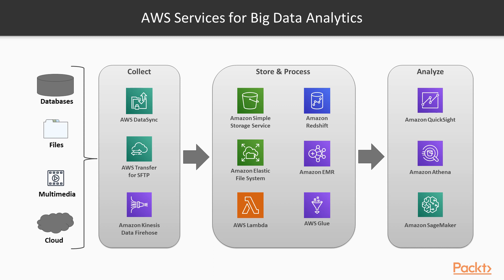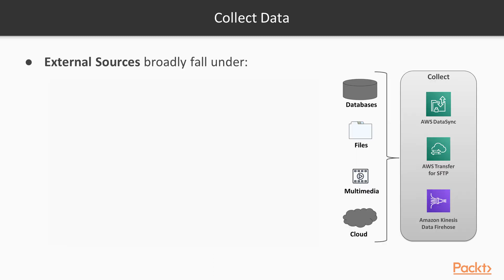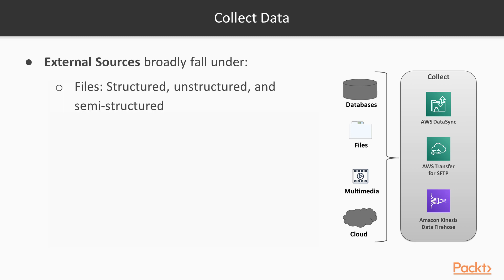In the subsequent slides, we'll go into details of each section. Data collection: data sources most commonly fit in one of the following three categories. First, files. They can be structured, like CSV; unstructured, like log files or video files; or semi-structured, like JSON.